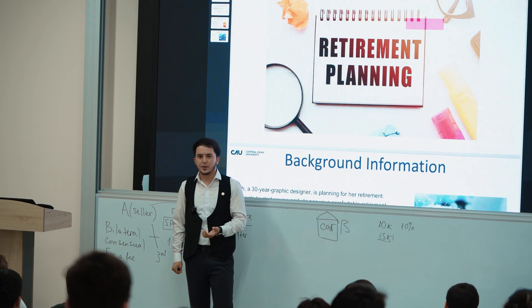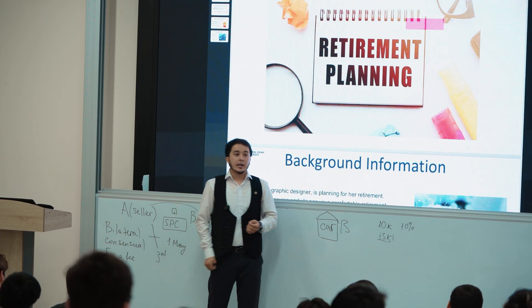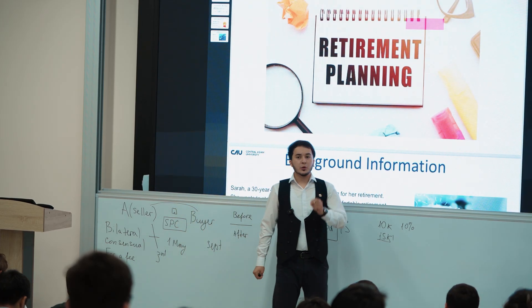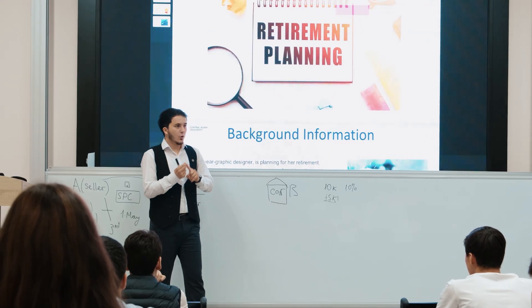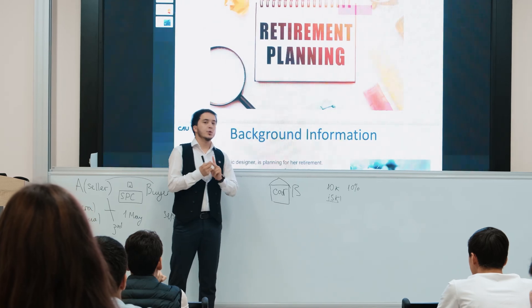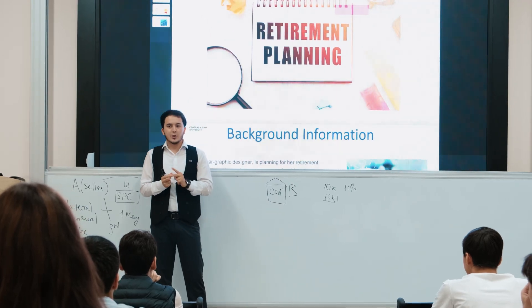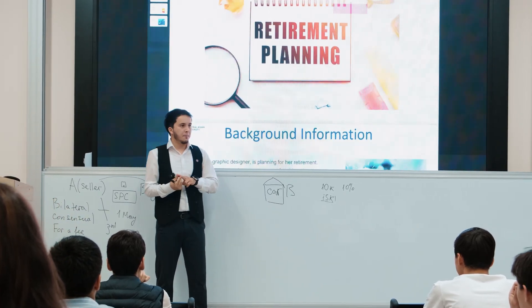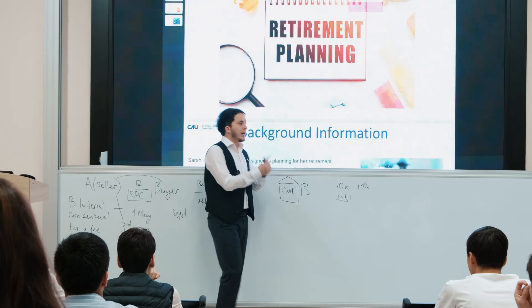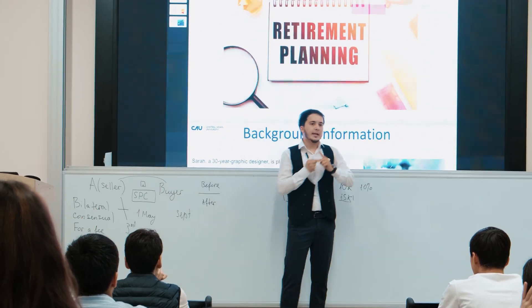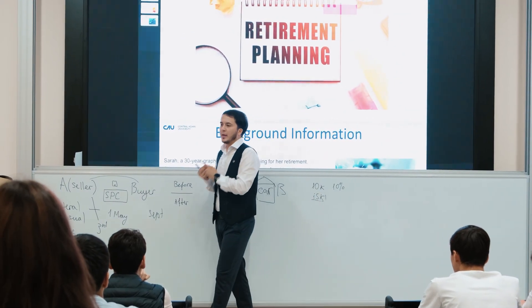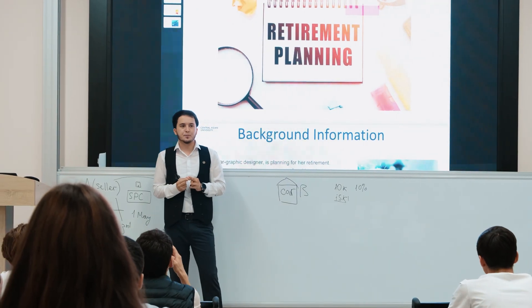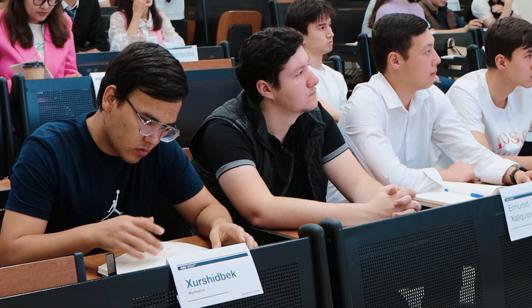Earlier this week we primarily focused on two types of annuities: the first one was ordinary annuity and the next one was annuity due. You learned the difference — the ordinary annuity is paid or received at the end of each period, and annuity due is paid or received at the beginning of each period.